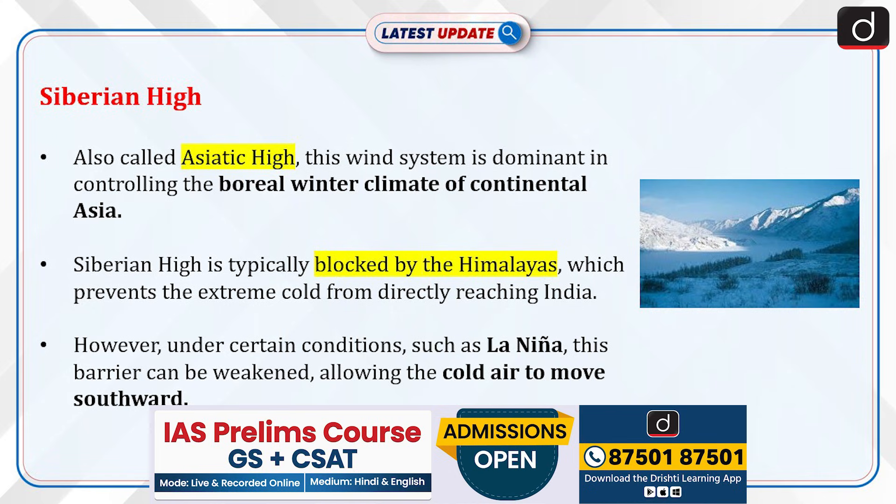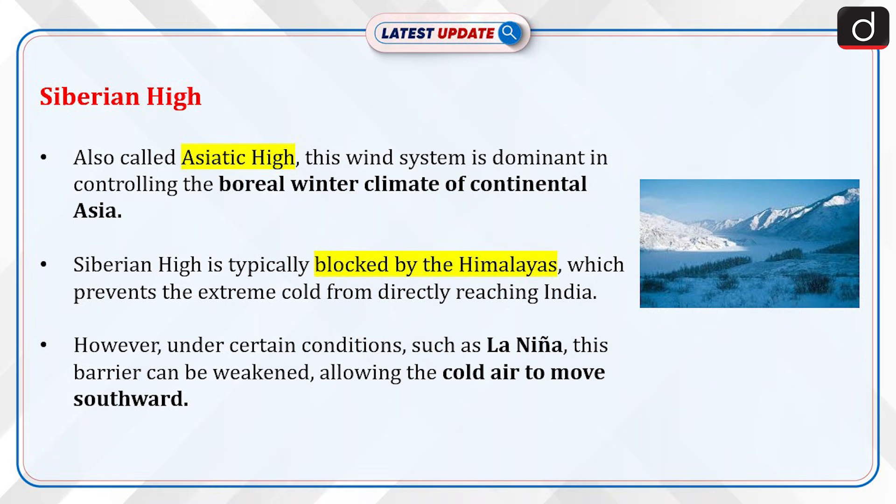The Siberian High, also called the Asiatic High, is a wind system dominant in controlling the boreal winter climate of continental Asia. The Siberian High is typically blocked by the Himalayas, which prevents the extreme cold from directly reaching India.